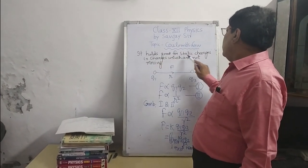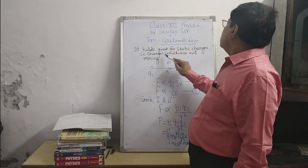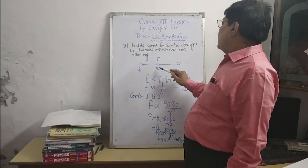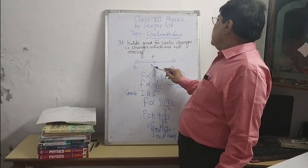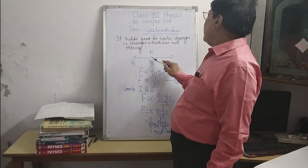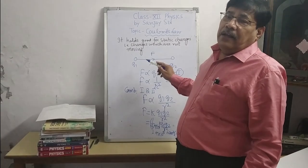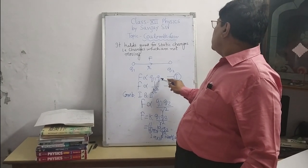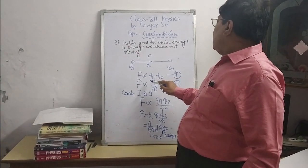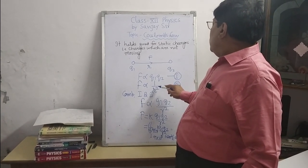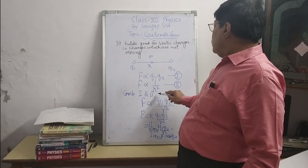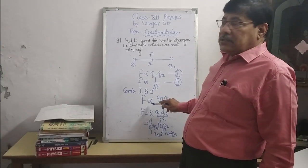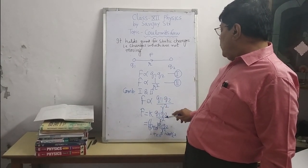Coulomb's law holds good for static charges — that is, charges which are not moving. Let us suppose that two point charges Q1 and Q2 are placed at a distance R from each other. Let the force F act between them; the force can be either attractive or repulsive. The force acting between them is directly proportional to the product of the charges and inversely proportional to R square. Combining both equations, F is proportional to Q1 Q2 upon R square, giving F equal to K Q1 Q2 upon R square.